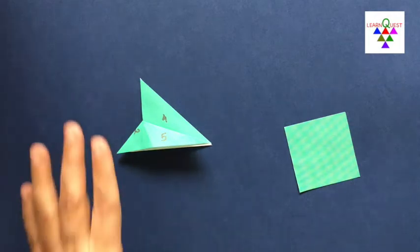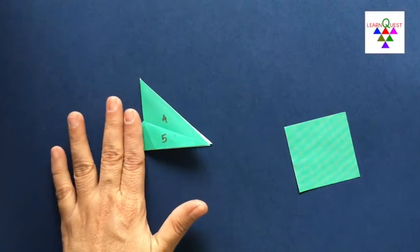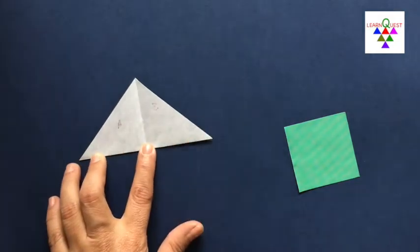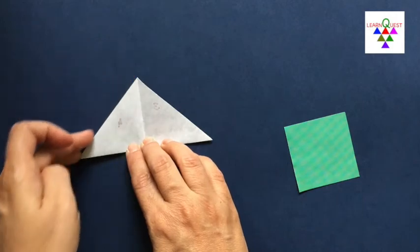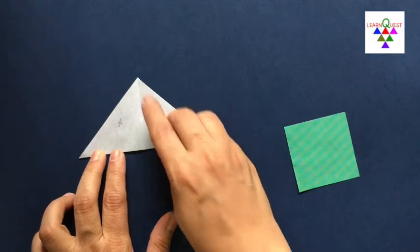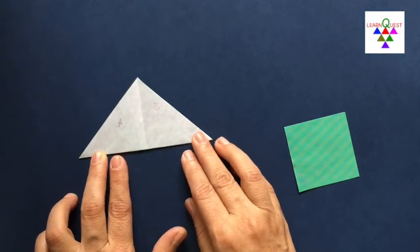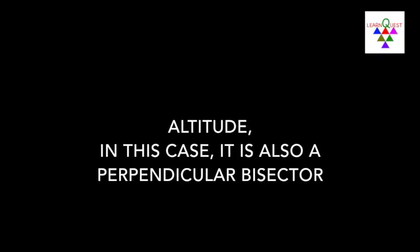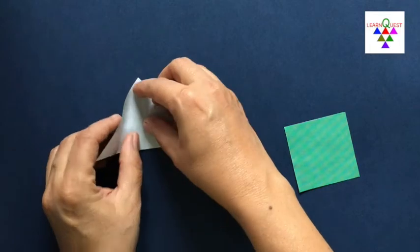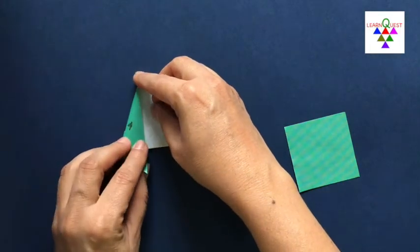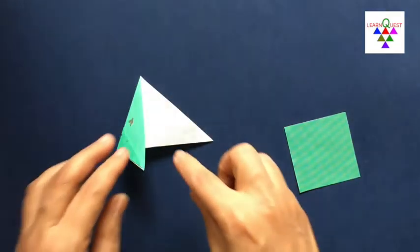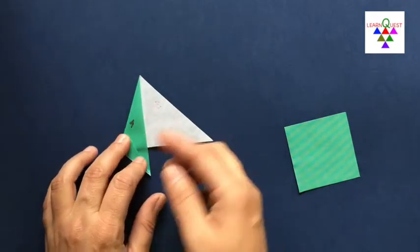Now let's continue our folding. Put your finger like this and open the model. Now you're going to take this edge and make it meet this line. Do you know the geometric term for this line? Let's fold it now. We have to fold both the sides.